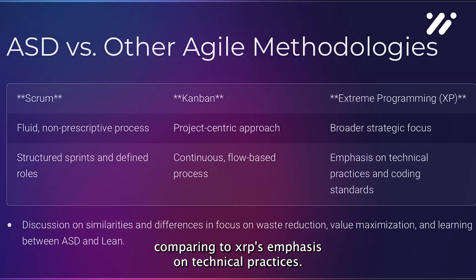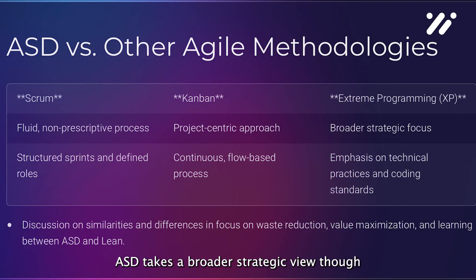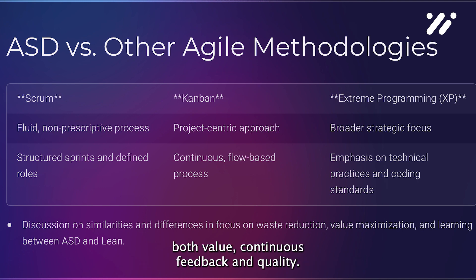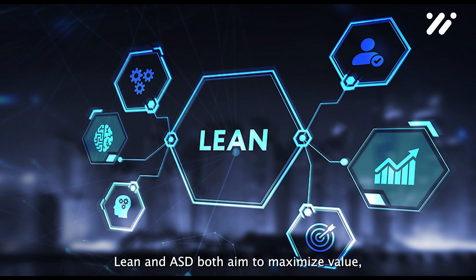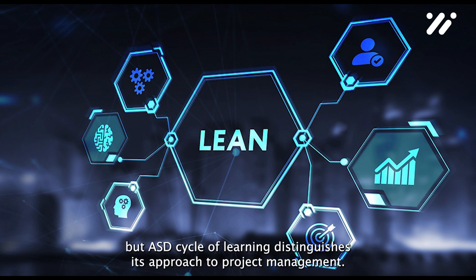Comparing to XP's emphasis on technical practices, ASD takes a broader strategic view, though both value continuous feedback and quality. Lean and ASD both aim to maximize value, but ASD's cycle of learning distinguishes its approach to project management.